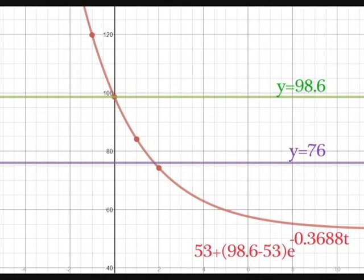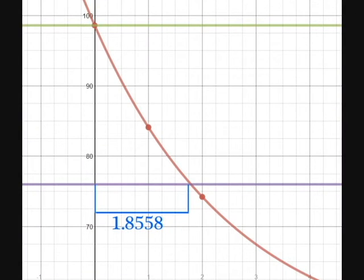We can also show the solution graphically by graphing the second equation that was found along with horizontal lines at y = 98.6 and y = 76. By calculating the intercepts of the lines and finding the differences between their x values, we get the same answer.